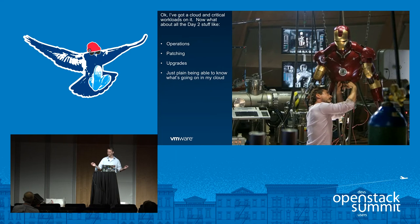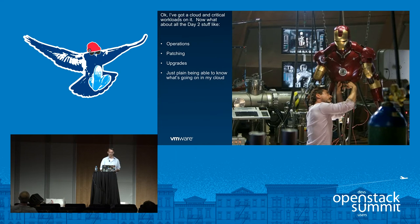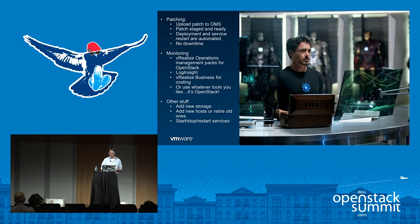Now we've got a cloud, it's relatively easy to stand up, we've got a decent robust architecture, and we've been able to get some workloads on it. The next step is worrying about all the day-two stuff because now we have real users. It's important that this thing stays alive, that I can manage it, monitor it, and know what's going on in my infrastructure. Operations, patching, and upgrades are things we need to worry about. Operability has been a longstanding important factor in the traditional virtualization world and especially on the networking side with NSX.